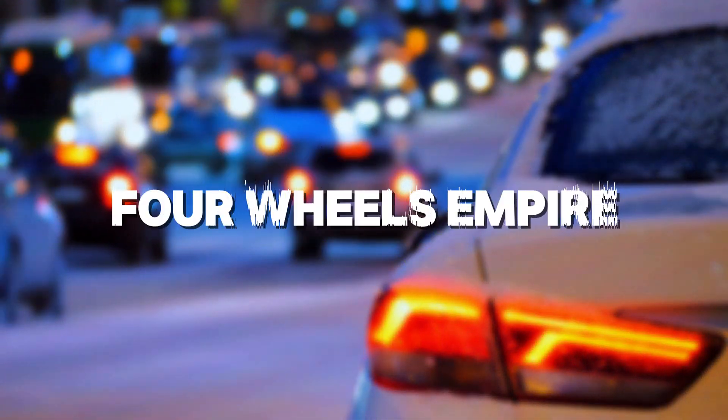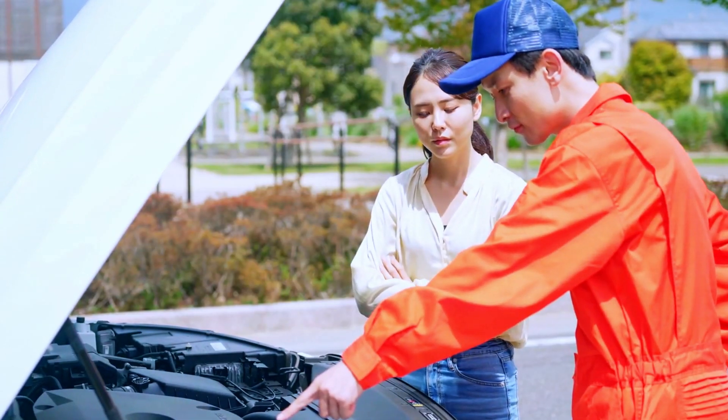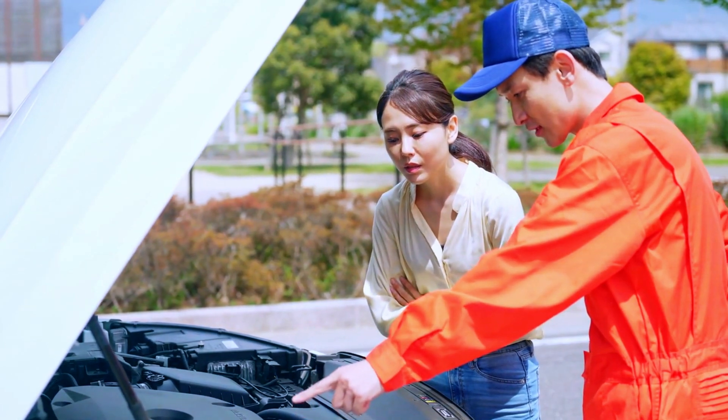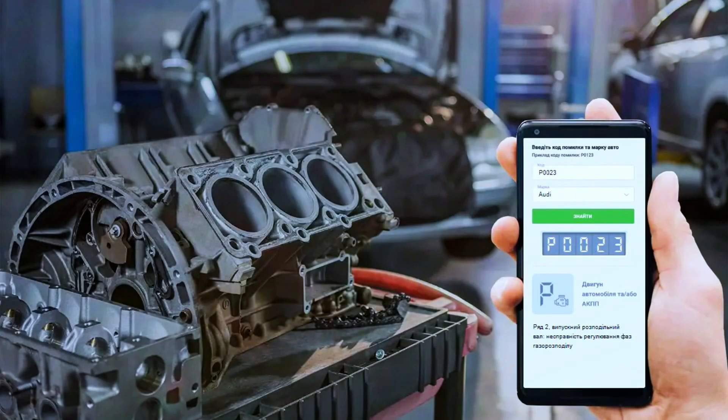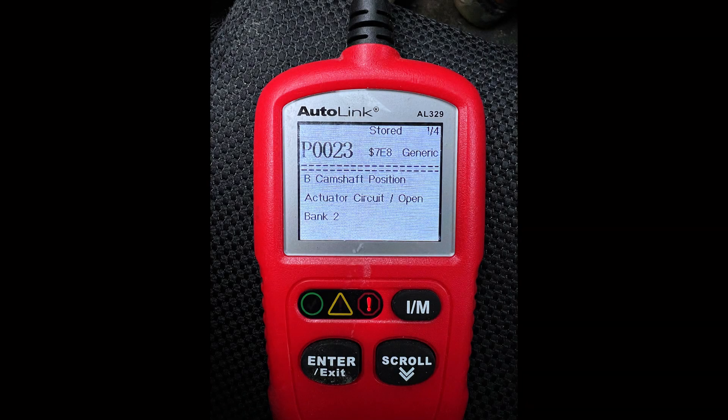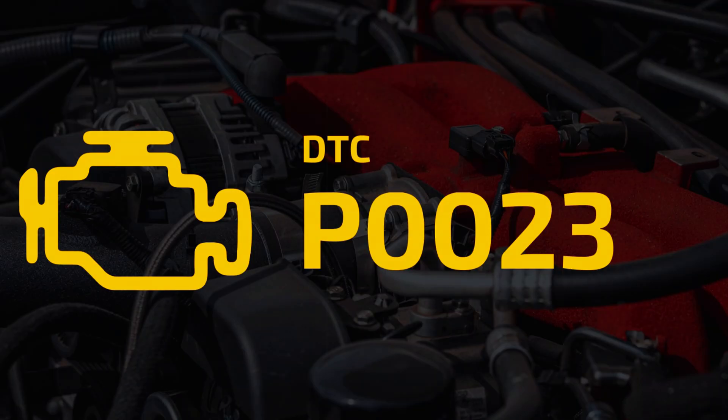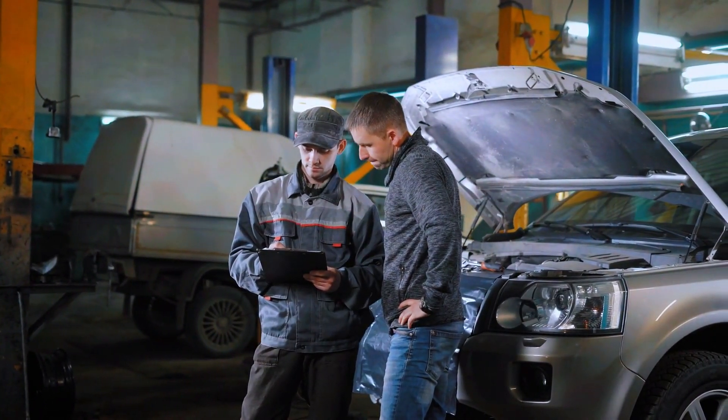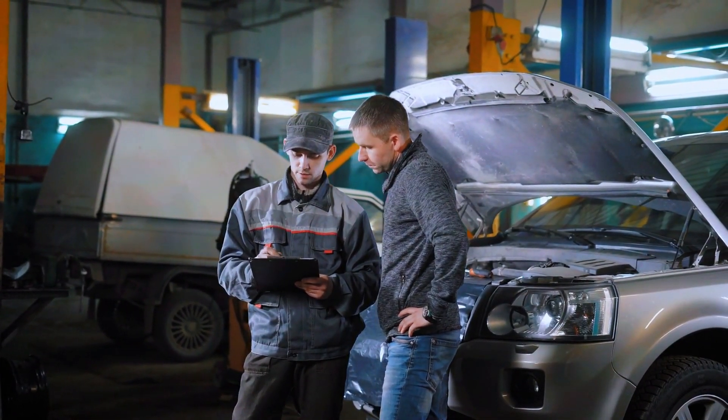Hey everyone, welcome back to the channel. Today, we're diving into a common trouble code that might pop up on your vehicle's OBD2 scanner, the P0013 code. If you've seen this code, don't worry we've got you covered. In this video, we'll explain what it means, what causes it, and how to fix it yourself. Let's get started.